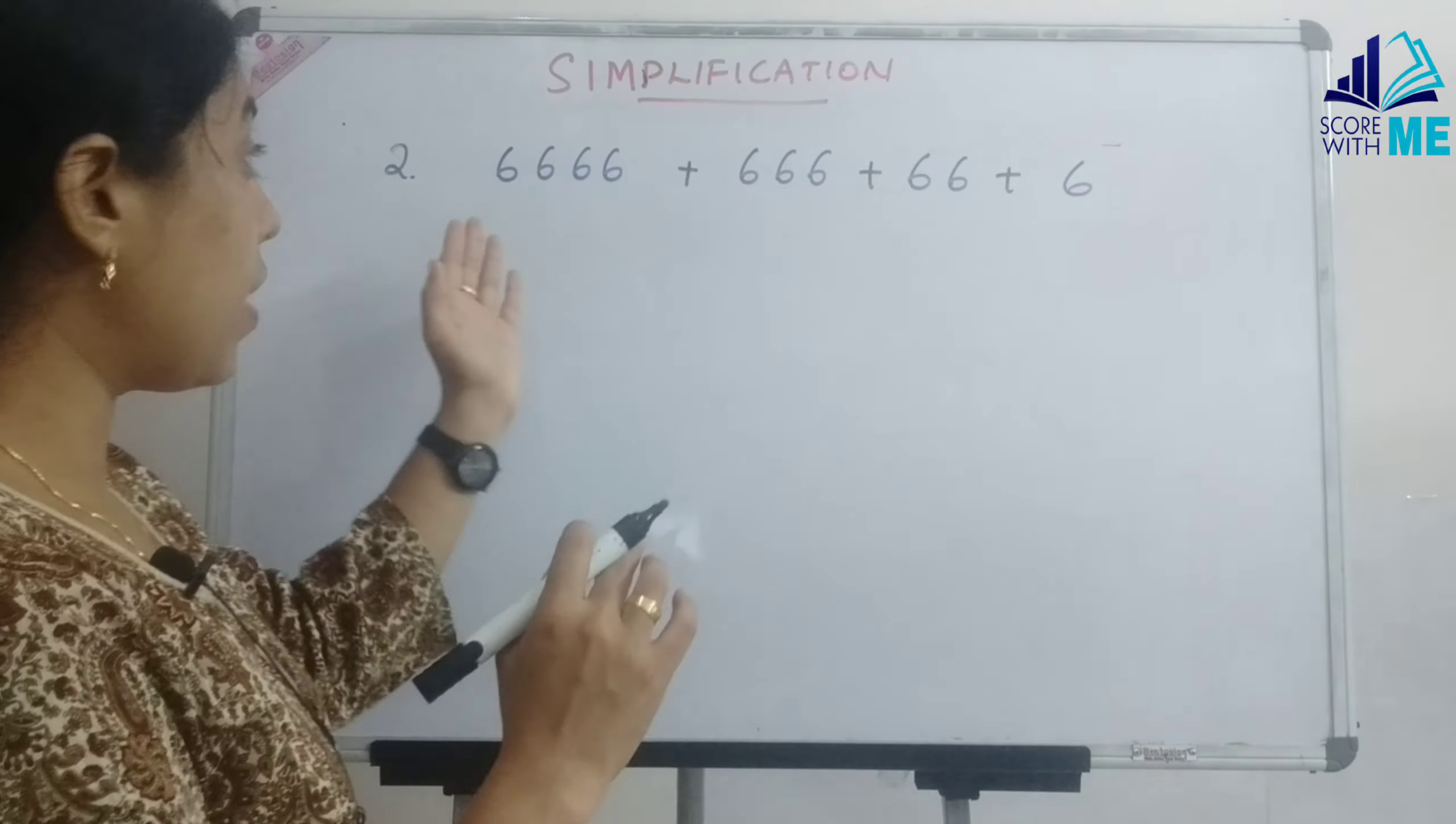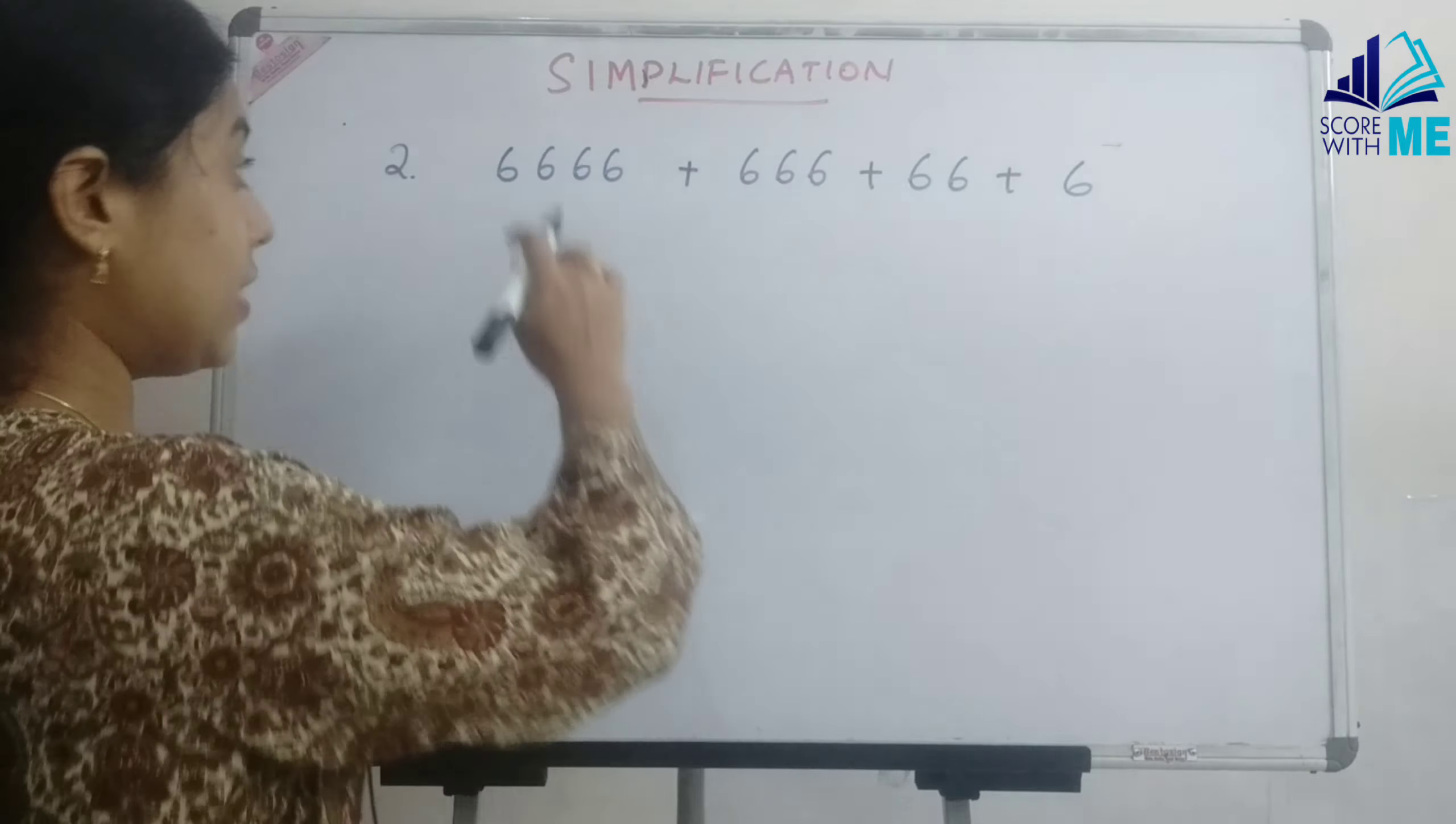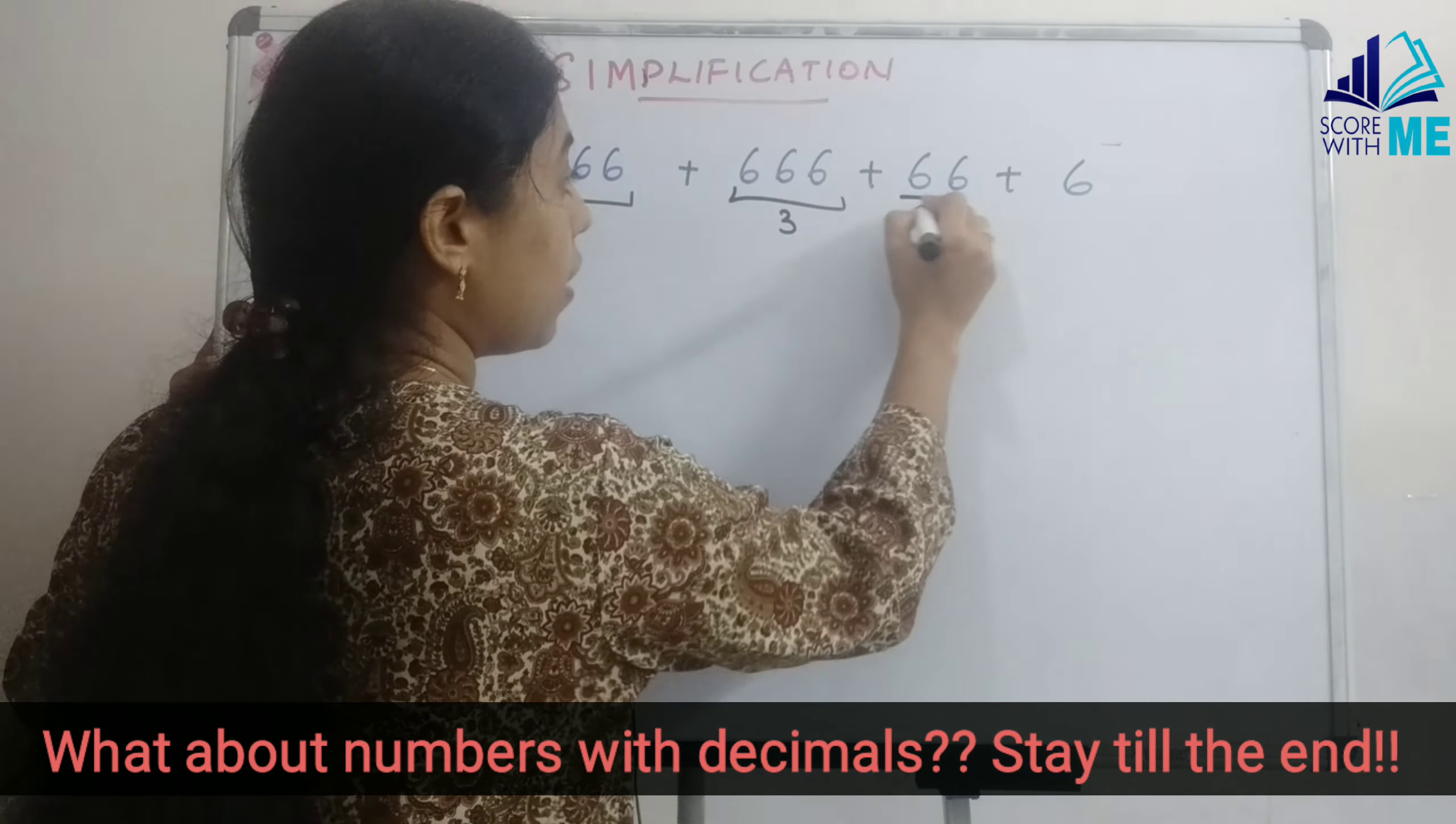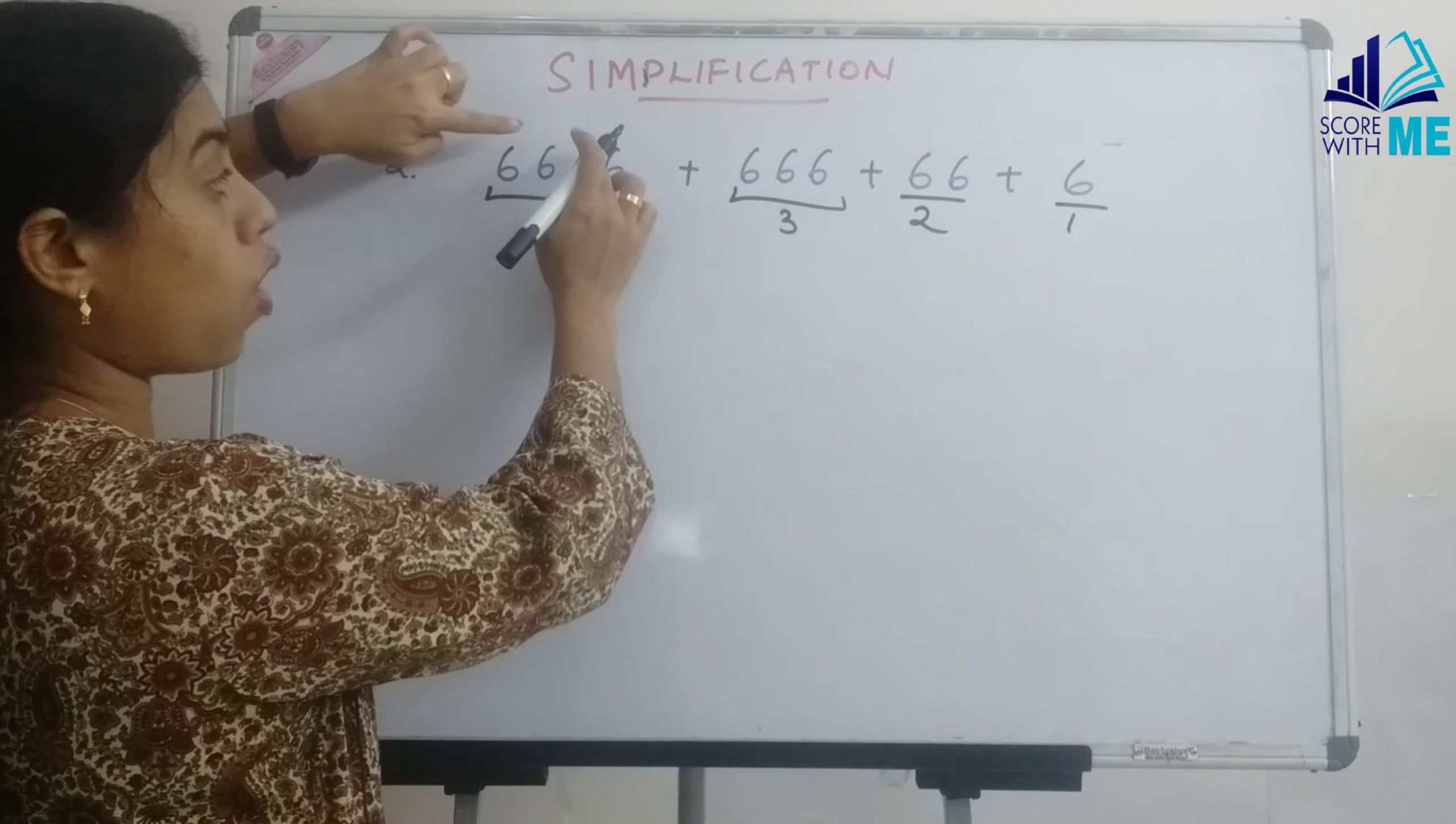We are going to do one more sum here: 4 times 6, 3 times 6, 2 times and 1. So we are not wasting time, directly going. Count the number of 6. There are 4 number of 6, there are 3 number of 6, there are 2 number of 6, there are 1 number of 6.